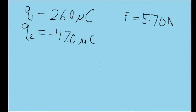In this problem, we have two point charges: q sub 1 equals 26 microcoulombs, and q sub 2 equals negative 47 microcoulombs. We are asked to find the distance between the two points if the electrostatic force between them has a magnitude of 5.7 newtons.